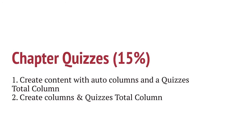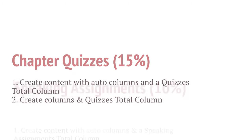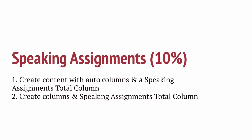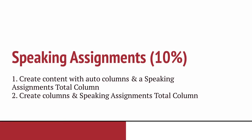For Chapter Quizzes, the same options are applicable. For the Speaking Assignments category, again choose between creating Blackboard or Publisher Content with automatic columns or create your own columns. Both will need a Total Column to gather scores. If you need to include drop grades in any category, please contact CIT for more information.